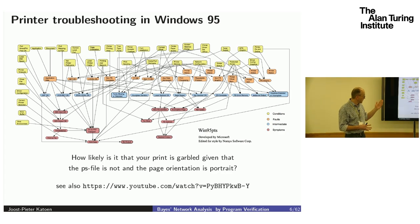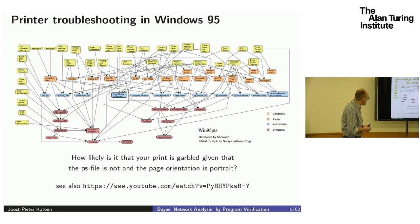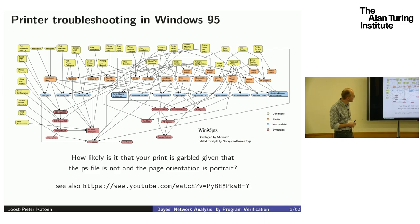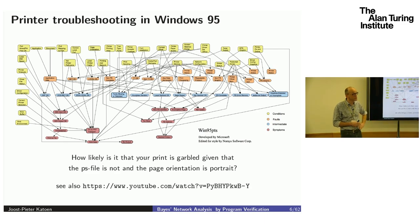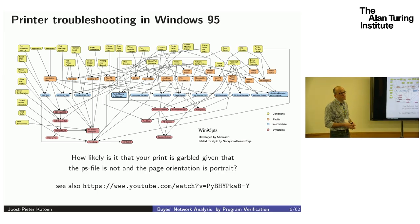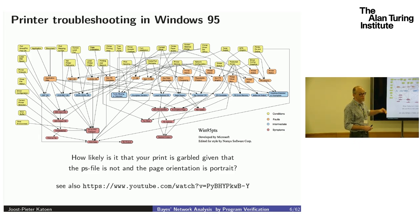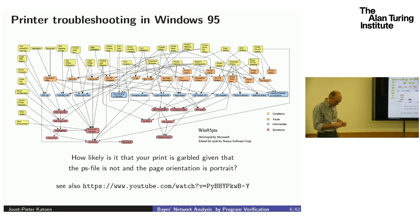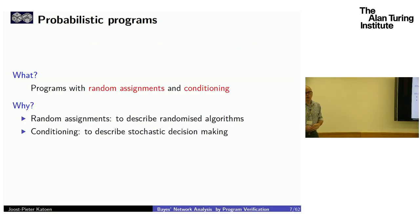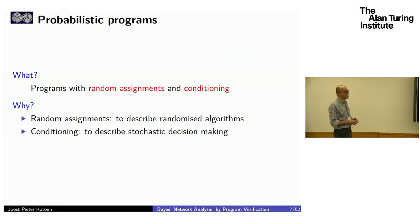In real life, Bayesian networks are much more complicated. This is an example for printer troubleshooting in Windows 95 — a Bayes network with several inputs. A typical question is: how likely is it that your print is garbled, given that the PS file is not corrupted but the page orientation is portrait? There is a whole YouTube video about this example.